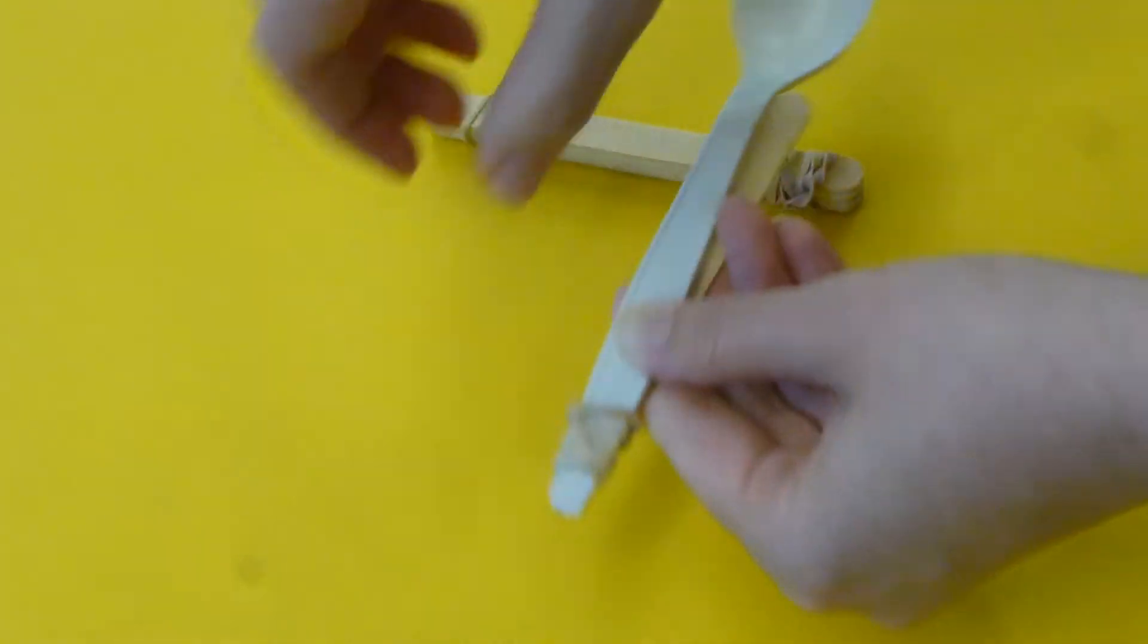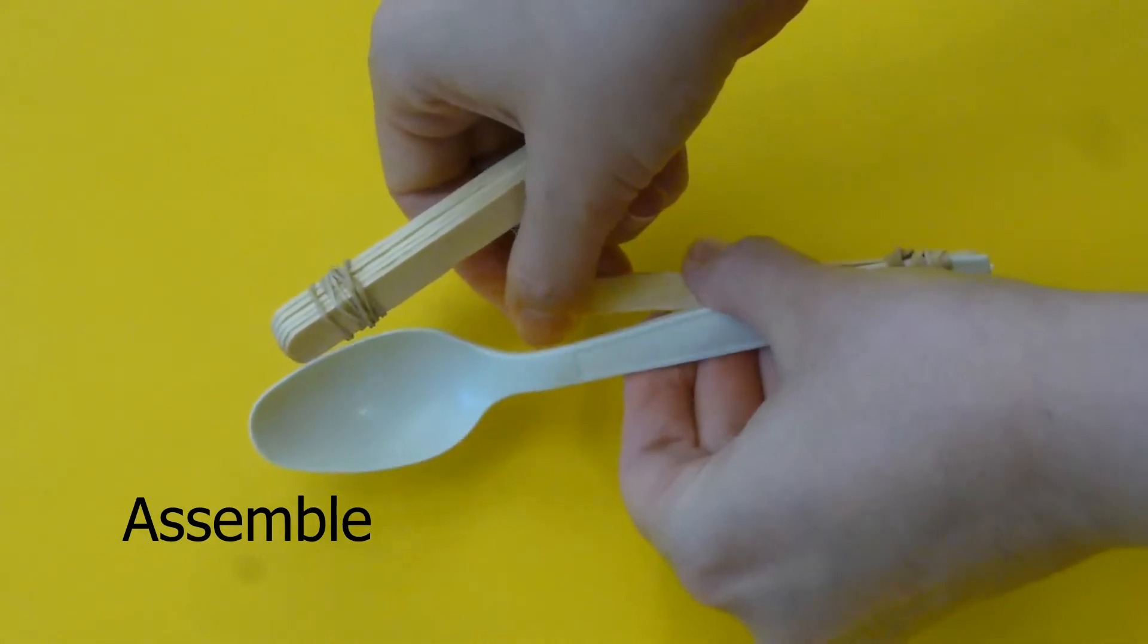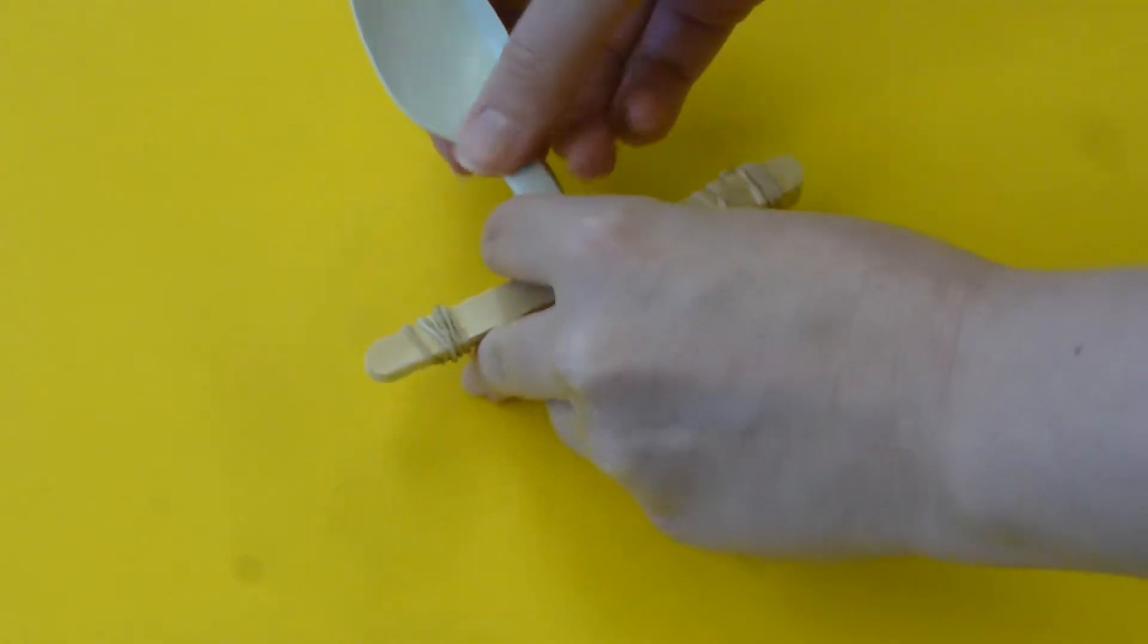Once both pieces are made, simply place your fulcrum in between your spoon and your popsicle stick. This will help create the tension that your catapult needs to fling the pom-pom.